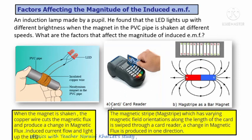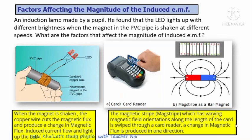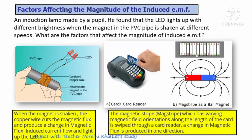Another application: a card has a magnetic stripe with varying magnetic field orientation along its length. When the card is swiped through a card reader, a change in magnetic flux is produced, and thus the card reader can read the identity of the card.